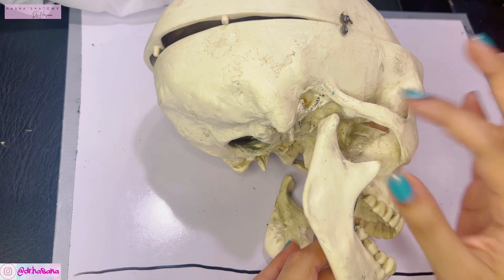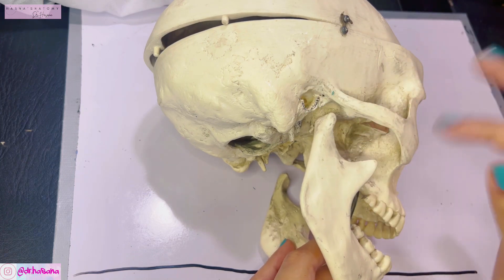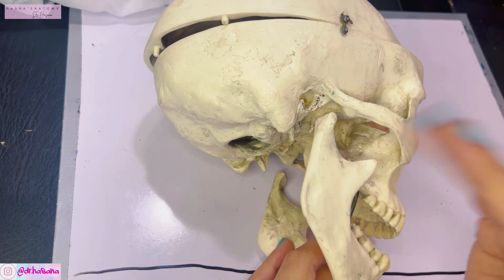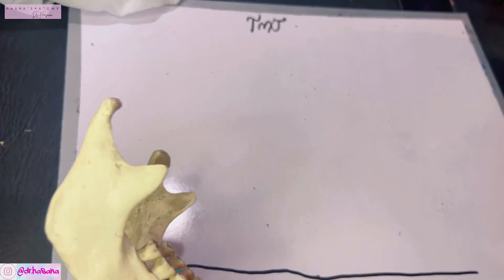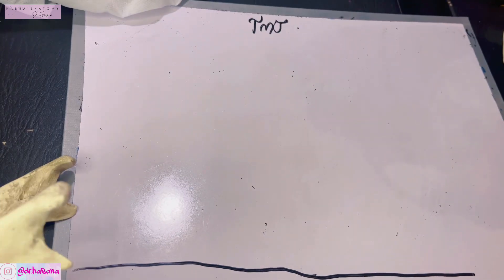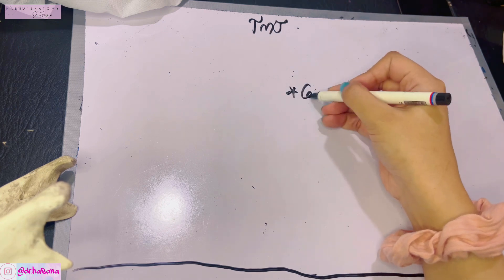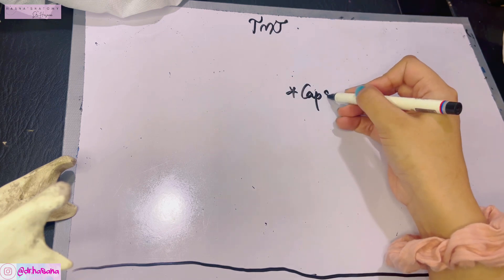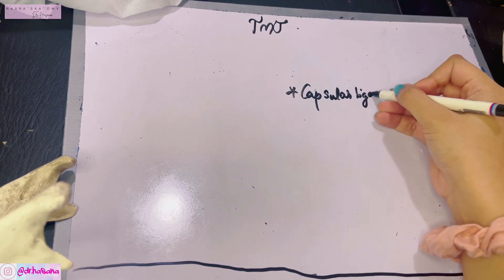The temporomandibular joint is divided by an intra-articular disc into an upper and a lower compartment. Now let's talk about the ligaments of the TMJ. The first ligament is always going to be the capsular ligament, which is basically the fibrous capsule of the joint.